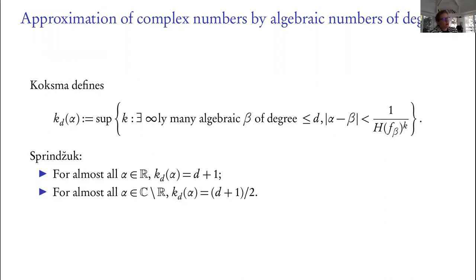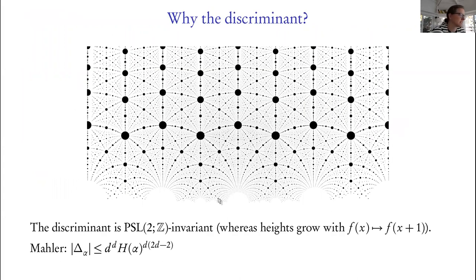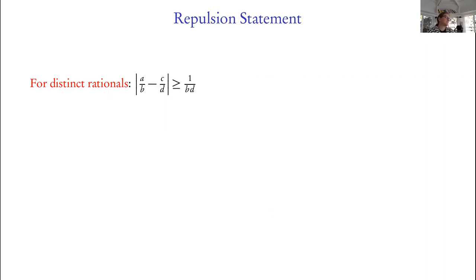Sprindžuk has a result for higher degree: for almost all α, κ(d) should be d+1 in the reals. But if α is in the complex numbers and not in the reals, it's (d+1)/2 — a smaller exponent, meaning worse approximation. They're actually harder to approximate in the complex plane. You might pick that up from the picture: the quadratics seem to cluster really strongly on the real line. So in the complex numbers we expect a different sort of behavior than in the reals.